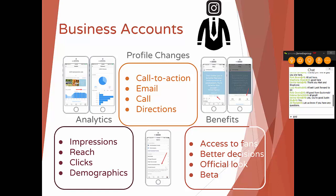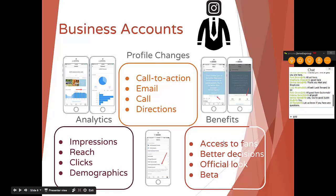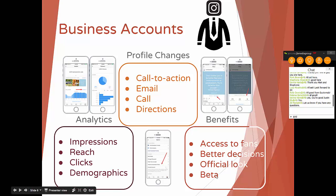This also includes time of day when people are on, and interests. The benefits are all pretty clear: access to fans, where people have more access to you and can engage with your business; better decisions based on analytics about what kind of content you're posting, when you're posting it, and who you're posting it to; it gives you that official look, which matters — if we're a business marketing as a business, it's good to look like one. And then beta — if you sign up for a cutting-edge feature on any social media platform like a business account on Instagram, you're far more likely to get beta versions of new features quicker in the future.